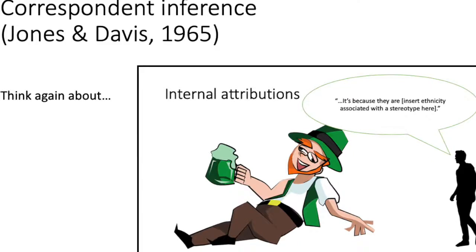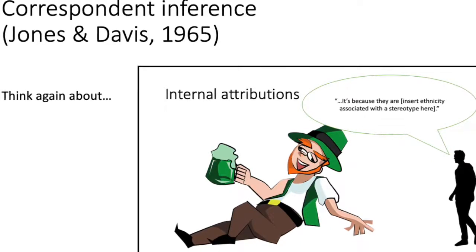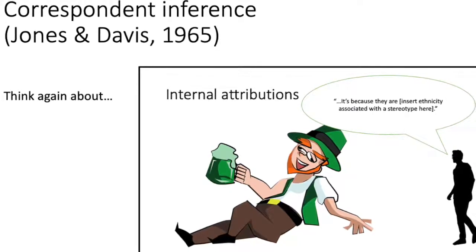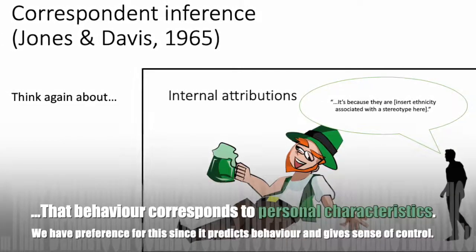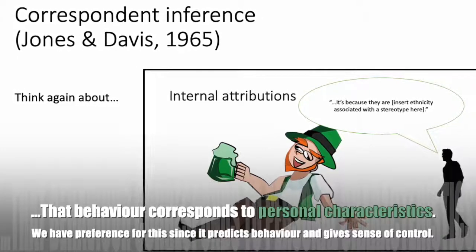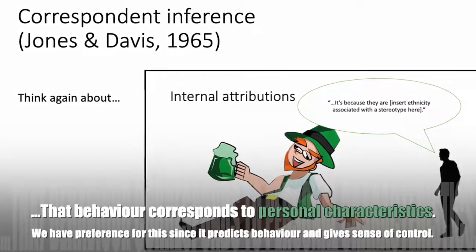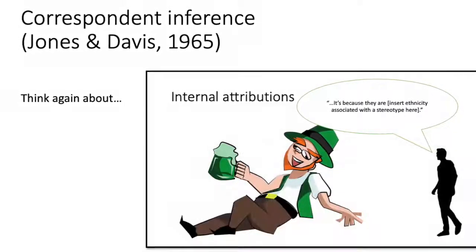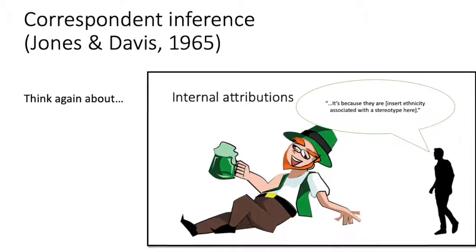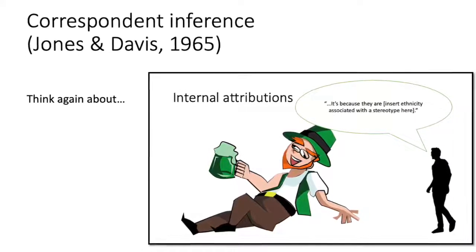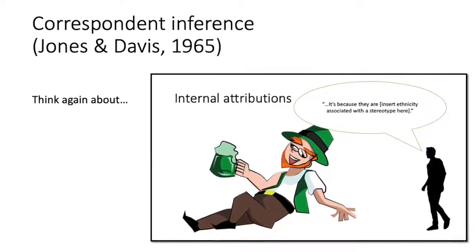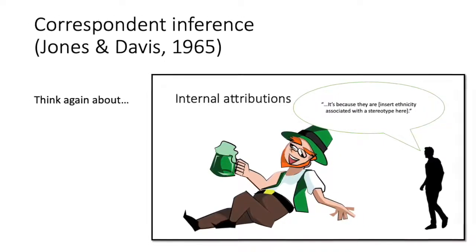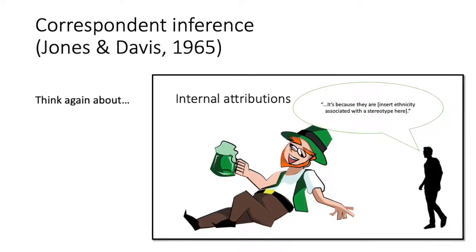Correspondent inference, proposed by Jones and Davis in 1965, is an inference that behaviour corresponds to stable personal characteristics. We have a preference for this since it allows us to predict behaviour and gives us a sense of control. For example, we might state that a certain group of people behave in a certain way because of a certain disposition — so it links very closely to a stereotype.